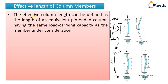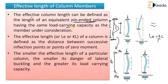Effective length is defined as the length of an equivalent pin-ended column. You have to make it equivalent to the normal one, and both ends must be pin-ended. There will be some conversion factor. The effective length is denoted by LE and is taken as K times L. K is the factor multiplied with the normal length to convert it into the effective one, and after conversion the load-carrying capacity should remain the same.